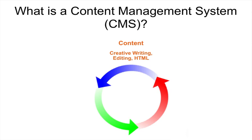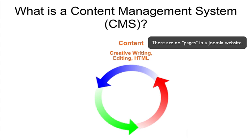A CMS splits your website into basically three different areas. First is content — it's what you put into your site: the creative writing, the editing, maybe some HTML, some PHP, CSS, whatever goes into your content items. Those are all stored in a database. You have to think of it like three almost separate entities, instead of the old way of writing HTML where each page was constructed and contained in a single file. There are no pages in a Joomla website — there are content items stored in a database.